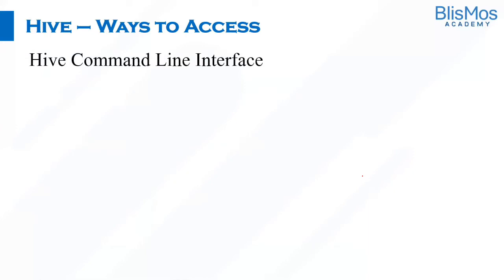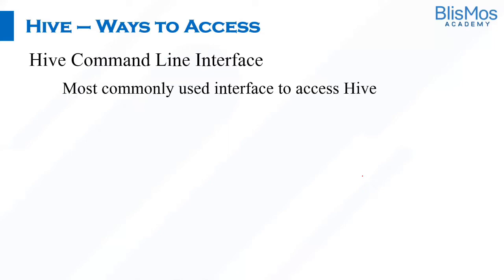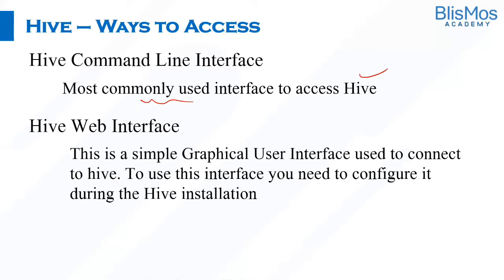There are three ways you can access Hive, which are covered as part of the Hive architecture. One way is through the Hive command line interface — it is the most commonly used interface to access Hive. The second one is the Hive web interface; if you want to access Hive through a GUI, that is a graphical user interface, you can go through the Hive web interface.